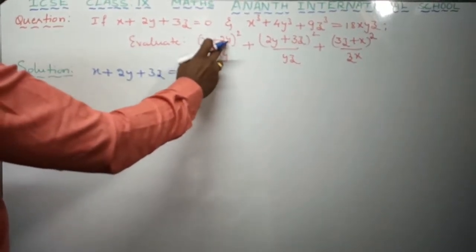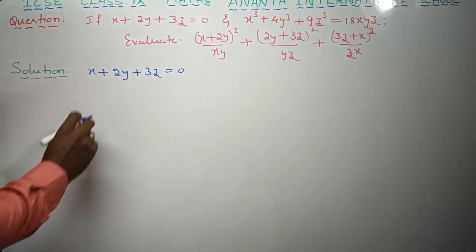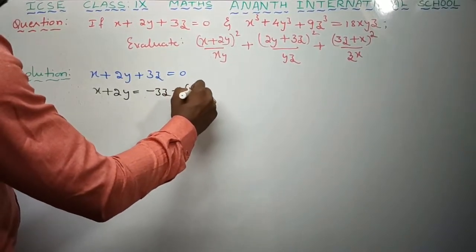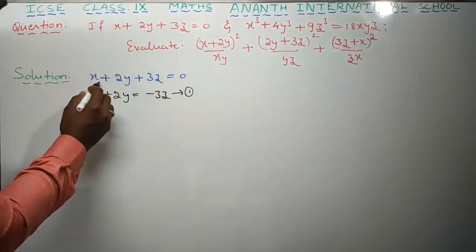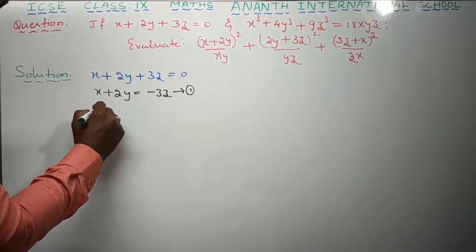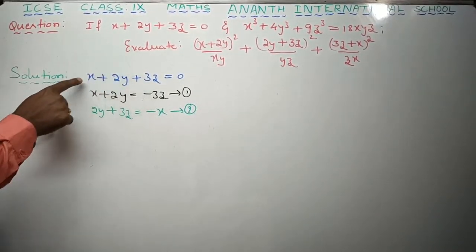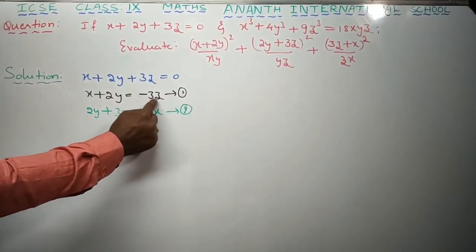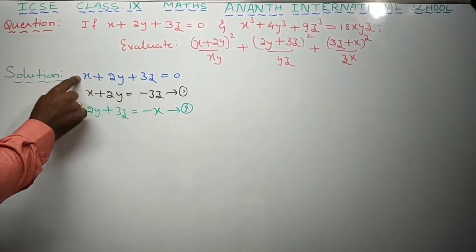Now let me come to the solution part, children. The given data is: x plus 2y plus 3z equals 0. Now look here — these two are the data and we are going to evaluate the sum of these three terms. The first term has numerator x plus 2y. From the given equation, if I transfer 3z to the right side, x plus 2y equals minus 3z. This is equation number 1.